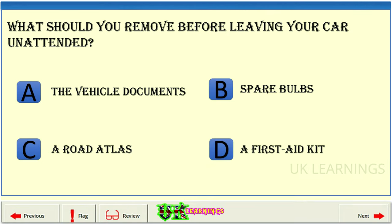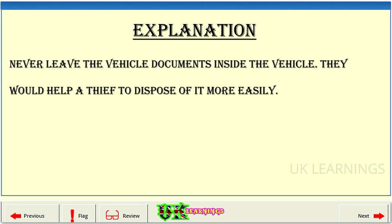What should you remove before leaving your car unattended? A: other vehicle documents. B: spare bulbs. C: a road atlas. D: a first aid kit. The correct answer is A: other vehicle documents. Explanation: Never leave the vehicle documents inside the vehicle — they would help a thief to dispose of it more easily.